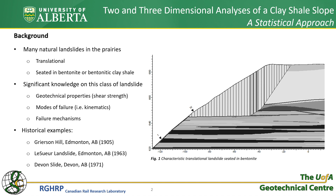Some examples include the famous Meurson Hill landslide in Edmonton, a landslide which has caused technical challenges for decades, the Lesseur landslide, also in Edmonton, the Devon landslide, and not to mention many landslides in the Peace River area.